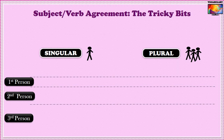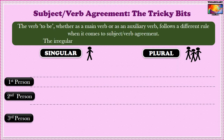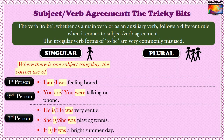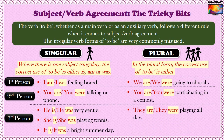There is one more tricky bit here. The verb 'to be,' whether as a main verb or as an auxiliary verb, follows a different rule when it comes to subject verb agreement. The irregular verb forms of 'to be' are very commonly misused. Where there is a singular subject, the correct use of 'to be' is either 'is,' 'am,' 'are,' or 'was.' For a plural subject, the correct use is either 'are' or 'were.'